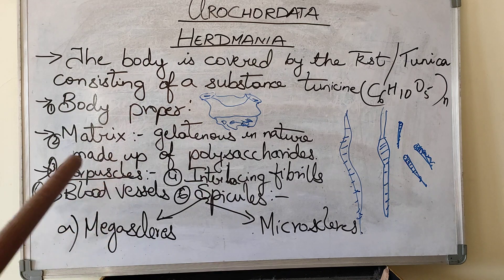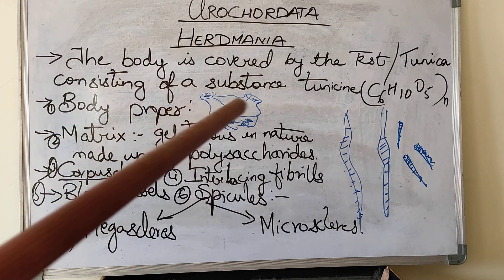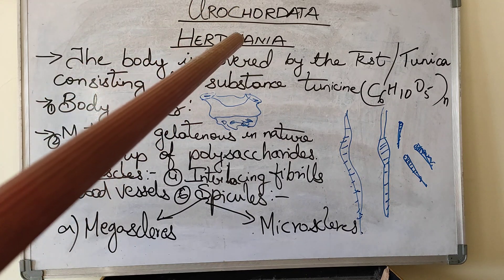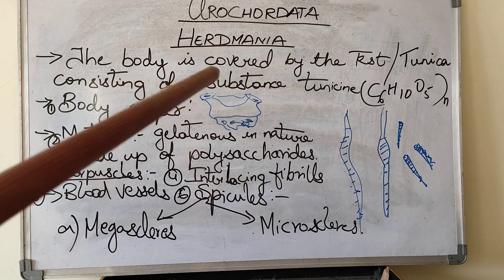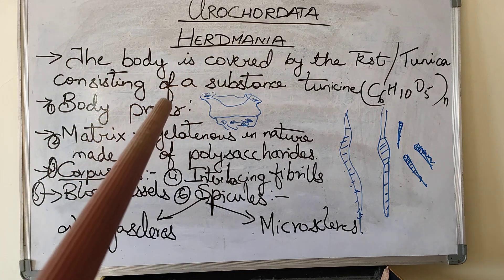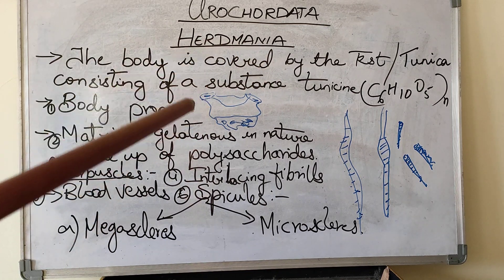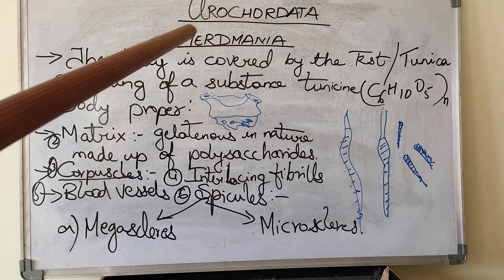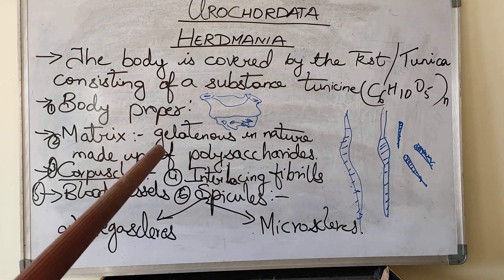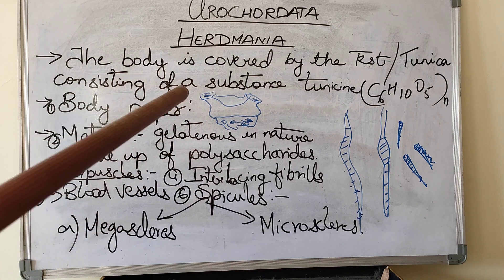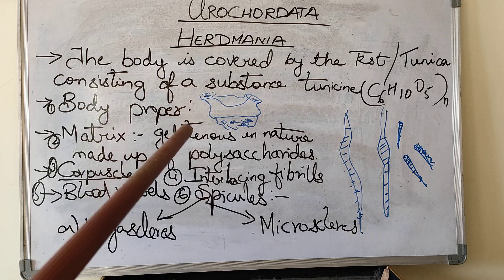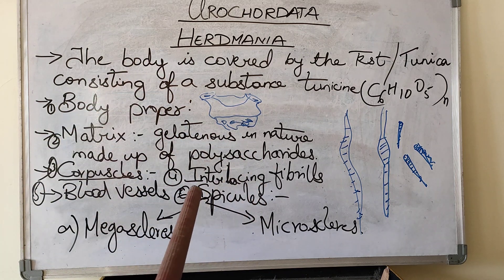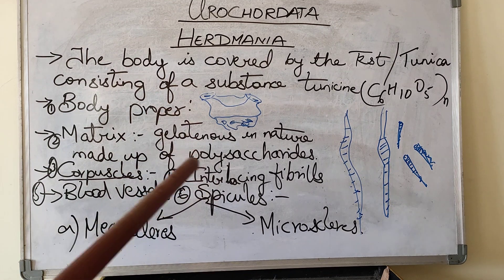Dear students, welcome back to our new session. Since we are dealing with the unit Urochordata, in the first unit this is one part that is Urochordata. We have learnt about Cephalochordata. In Urochordata we have seen about Herdmania, its external morphology, its introduction — everything. So today we are going to see the division of the body of Herdmania: how the body is divided into different parts and what are its functions.